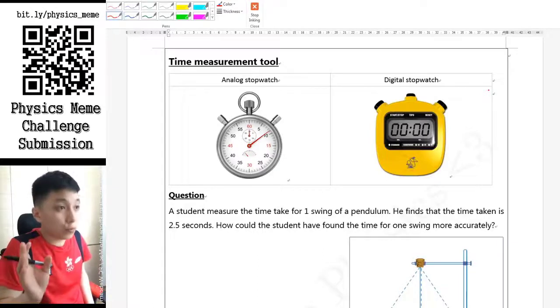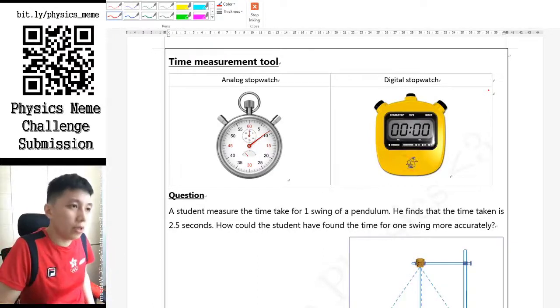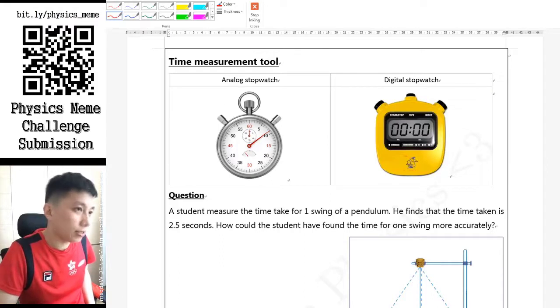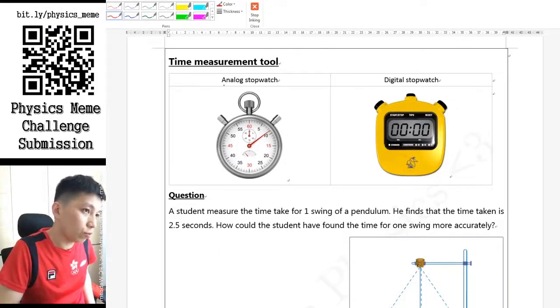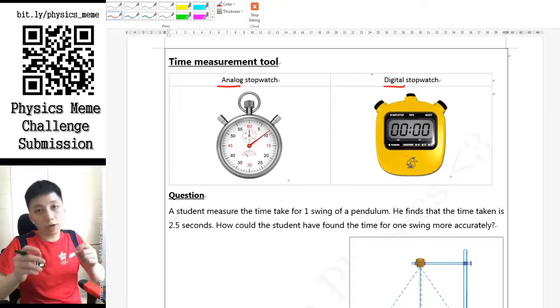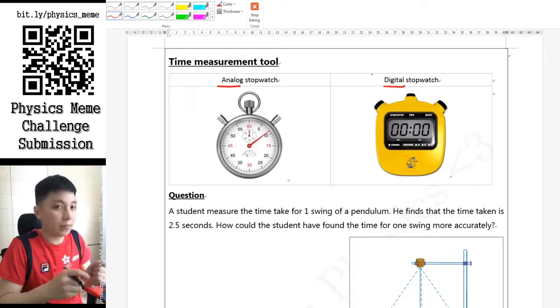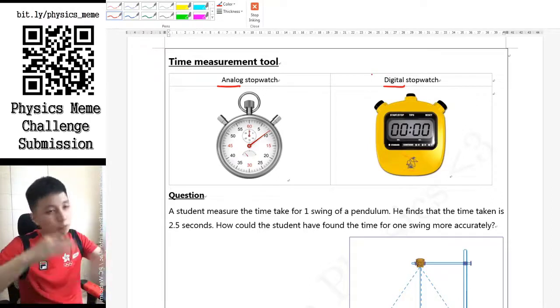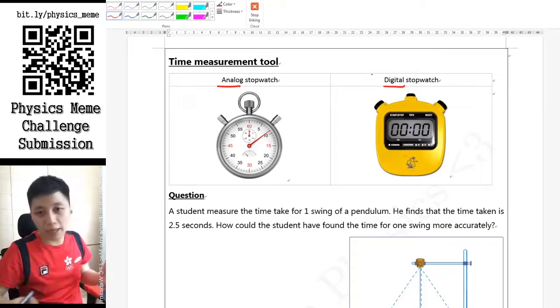Okay, so now we move on to time measurement tools. On the screen you can see there are two kinds of stopwatch: one is called analog, one is called digital. If you remember, we talked about the digital vernier caliper. The idea is very similar - digital has been designed with a display so you can see its values directly.